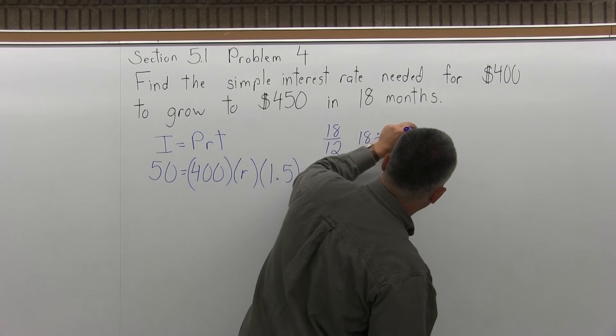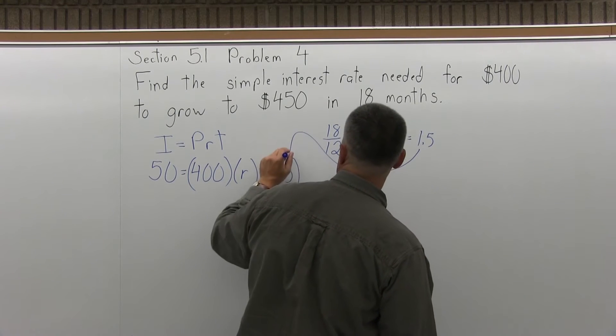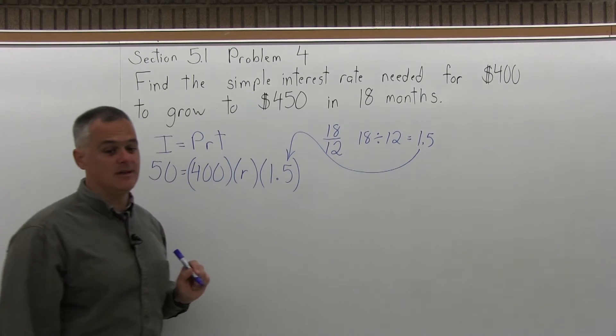just do 18 months divided by 12 months per year and your calculator can do the work for you. Just enter 18 divided by 12 and it will tell you that it's 1.5 years. That's where you get the value for T, the time in years.